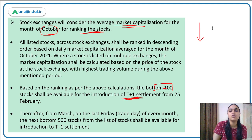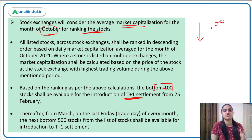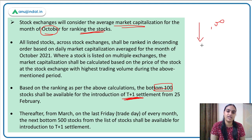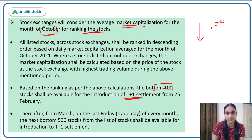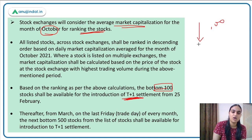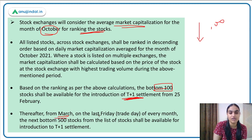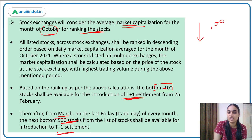First, the bottom 100 stocks arranged by October market capitalization will move to T+1 settlement from 25th February onwards. After that, from March onwards, on the last Friday of every month, the next bottom 500 stocks will be available for T+1 settlement, continuing the phased rollout across all listed stocks.